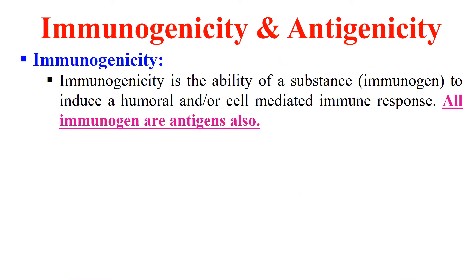There are two terms related to antigens. The first is immunogenicity. Immunogenicity is the power or ability of an antigen to activate the immune system. If an antigen can activate the immune system, we say that antigen has the power of immunogenicity. Generally, all immunogens are antigens.